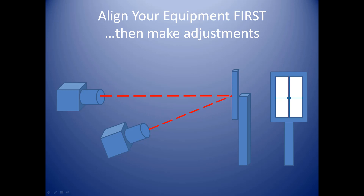This is a unique examination because we're using two different camera positions to acquire the images. We'll cover the AP view of the cervical spine first. This requires that you lower your camera and angle it upward toward the head 15 degrees.